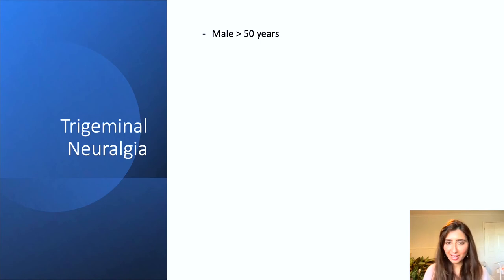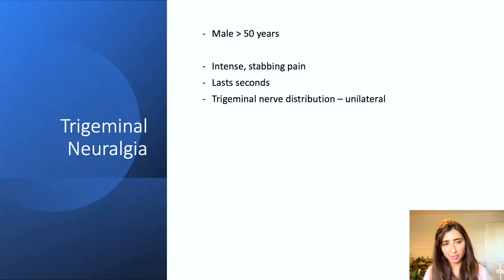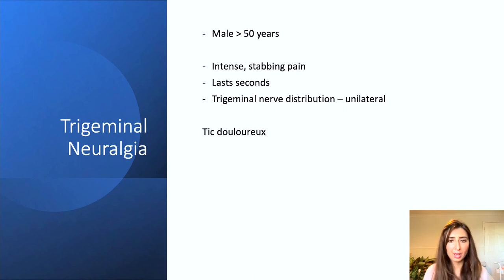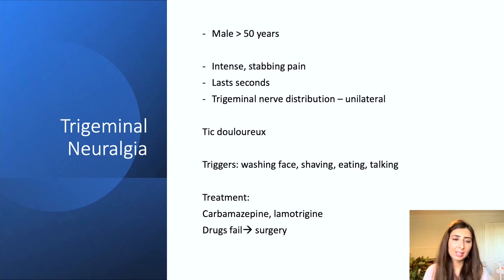Trigeminal neuralgia tends to affect men over the age of 50, so it doesn't quite fit the demographics of our case. The symptoms are intense stabbing pain lasting for seconds — again different from our scenario where the headache lasted five hours. The pain affects the trigeminal nerve distribution and is unilateral. Patients commonly present with tic douloureux, screwing up their face due to the severity of pain. Triggers include washing the face, shaving, eating, or talking. Treatments are anti-epileptics such as carbamazepine or lamotrigine, and if drugs fail, surgical input is an alternative.